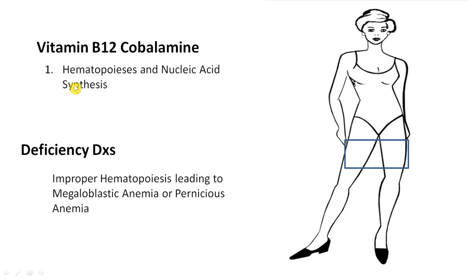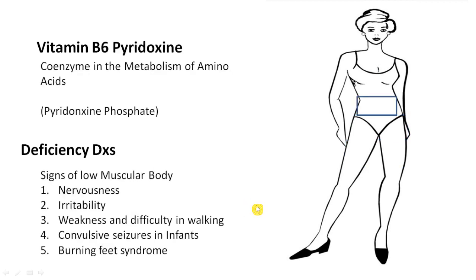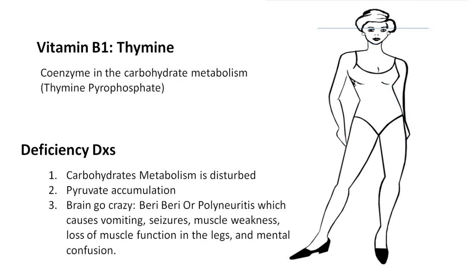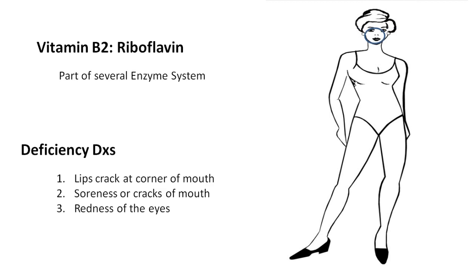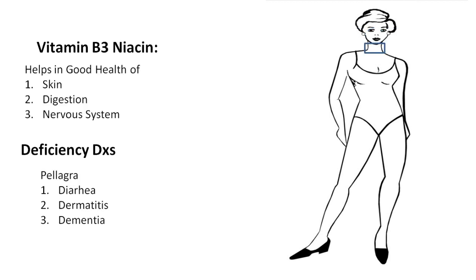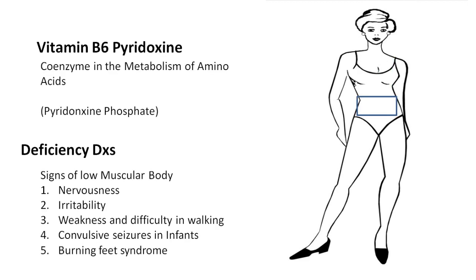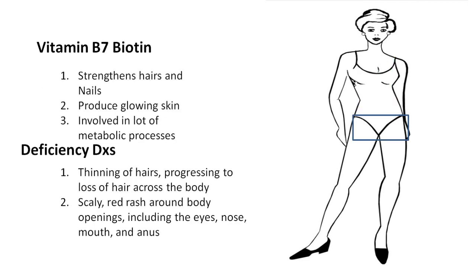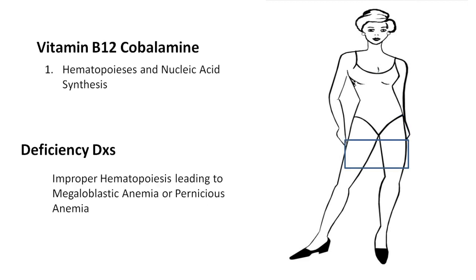Vitamin B12 is Cobalamin. You can remember it from the femur and bone marrow. It helps in hematopoiesis and nucleic acid synthesis. Its deficiency causes improper hematopoiesis leading to megaloblastic anemia and pernicious anemia. This completes the B vitamins: B1 Thiamine, B2 Riboflavin, B3 Niacin, B5 Pantothenic acid, B6 Pyridoxine, B7 Biotin, and B12 Cobalamin.